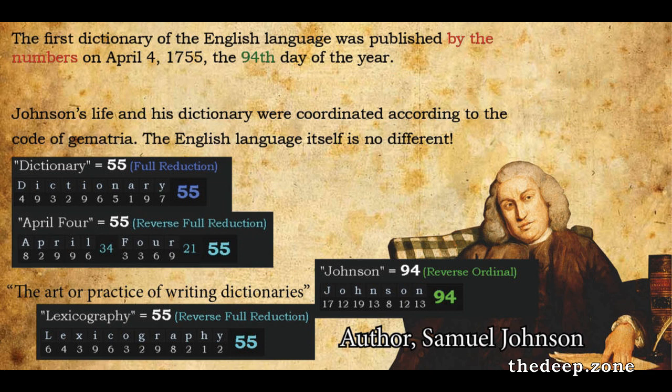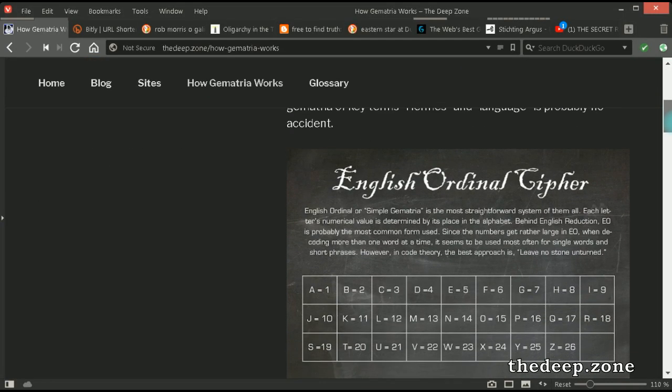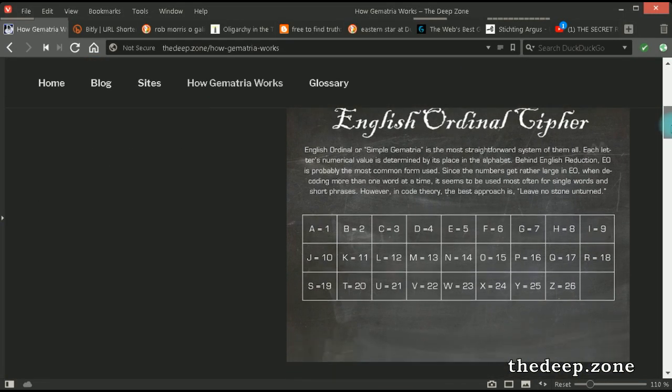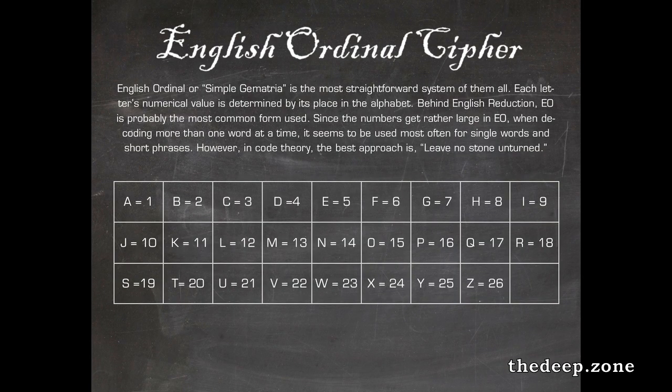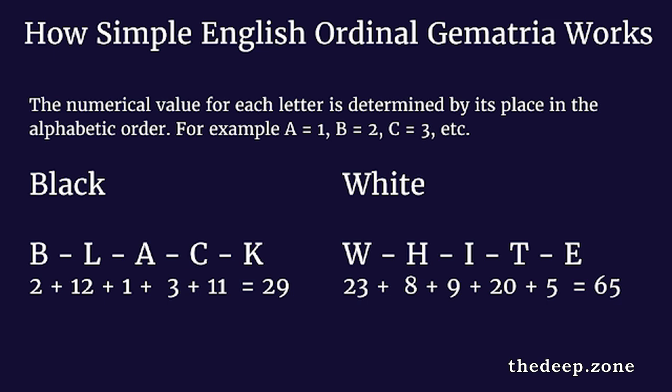Let me go up here to my English ordinal cipher to show you how. There we go. Okay. Now, when you take the alphabet and you start with A being 1 and Z being 26, and you can see how all those letters may add up and everything, B2, C3, on up the line right there, that's what's called English ordinal, the English ordinal cipher.